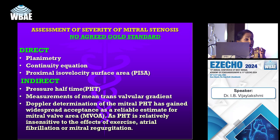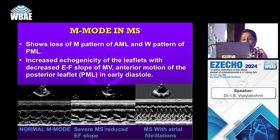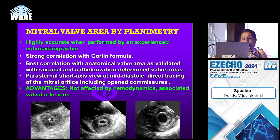M-mode, though not commonly used nowadays, is very important for assessment. The normal M complex shows the anterior mitral leaflet and W pattern for the posterior mitral leaflet. In severe mitral stenosis, the EF slope is reduced. In atrial fibrillation with fast ventricular rate, the M-mode appearance changes characteristically.